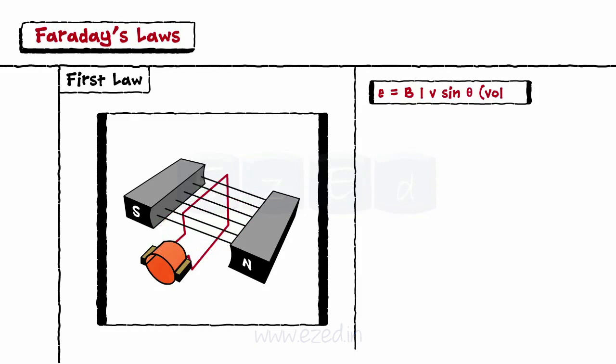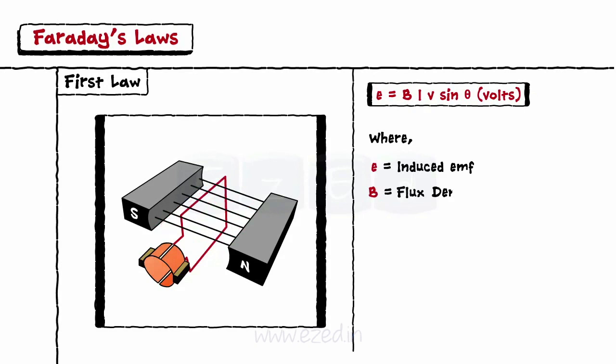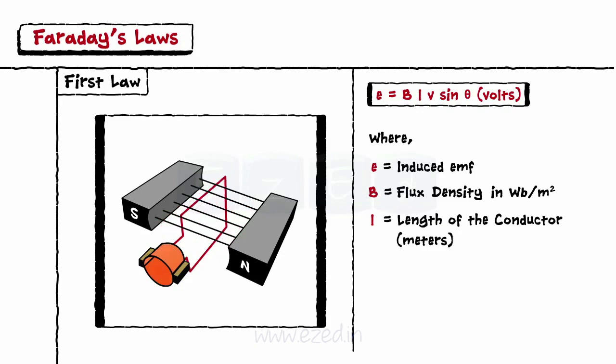Where E equals induced EMF, B equals flux density in Weber per meter square, L equals length of the conductor in meters, and theta equals angle between the direction of the motion of the conductor and the magnetic field.